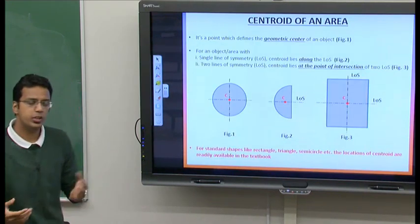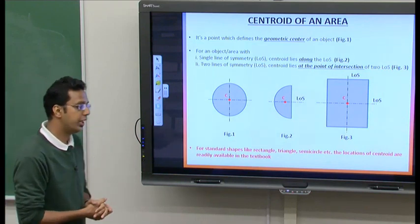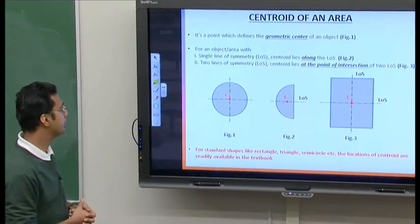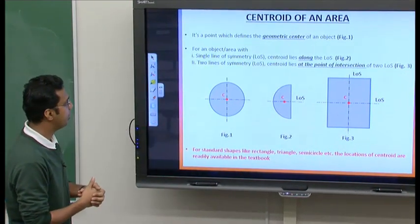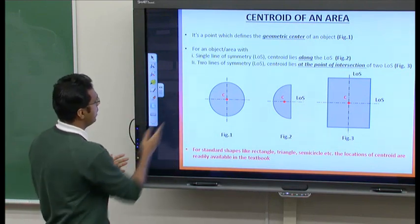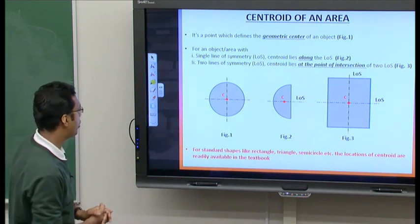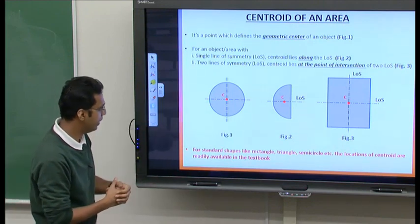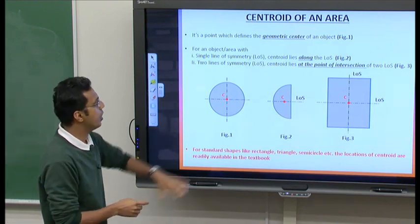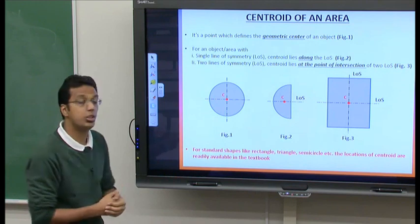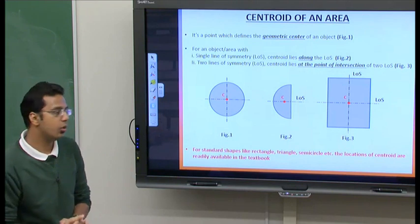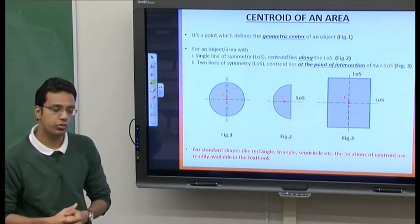As all of you may know, the centroid of an area is simply the geometric center of an object or area. As shown in figure 1, the center of a circle is essentially its centroid, represented by point C. In many cases we use lines of symmetry to locate centroids, and depending on which shape you are looking at, it may have one or more lines of symmetry.